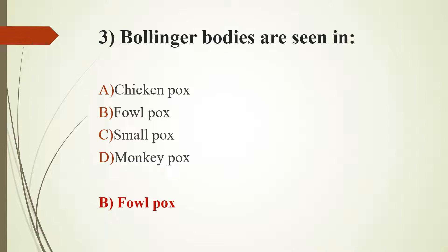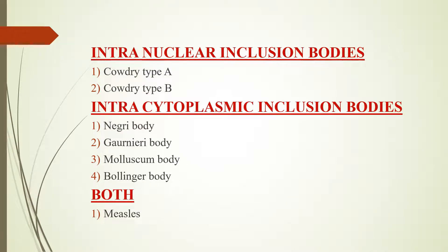Important inclusion bodies summary: Intranuclear inclusion bodies — Type A includes herpes and yellow fever virus; Type B includes adenovirus and poliovirus, detectable by Tzanck smear. Intracytoplasmic inclusion bodies — Negri body seen in rabies; Guarnieri body seen in vaccinia virus; Molluscum bodies in molluscum contagiosum; Bollinger body in fowl pox. Measles shows both intracytoplasmic and intranuclear inclusion bodies.